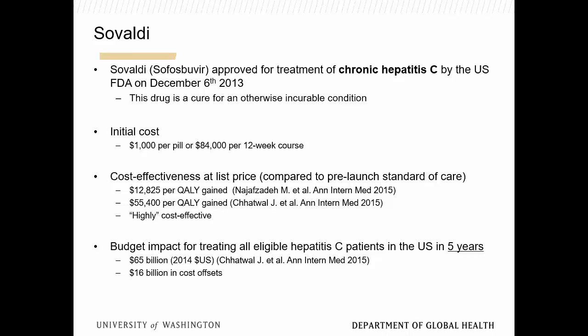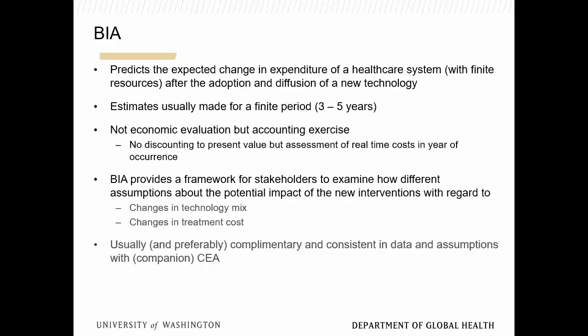Another example: when statins came out in the UK, a study showed you would need to put up about 20% of the UK budget to cover everyone in the patient population at the price at the time. So they decided to cover only those who would benefit even more — those at higher risk for a second myocardial infarction. Essentially, budget impact analysis helps predict the change in expenditure in a system with finite resources, with adoption and diffusion of a new technology. It's a short-term analysis.